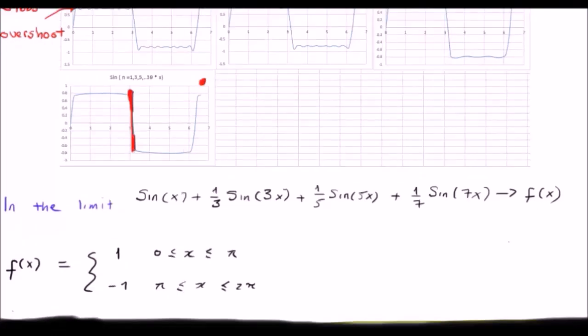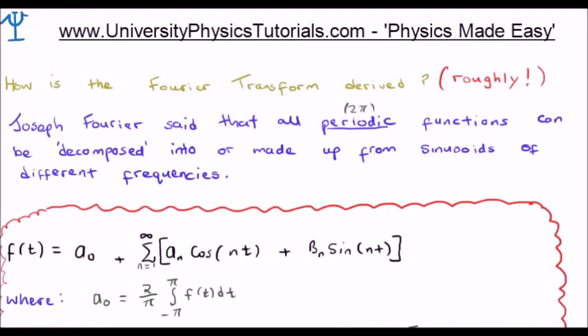Where do we go from here? I would now like to discuss with you how we would derive the Fourier transform. And I mean this roughly because I will perform a rigorous derivation in a future video. So Joseph Fourier said that all 2 pi periodic functions can be decomposed or made up from sinusoids of varying frequencies.